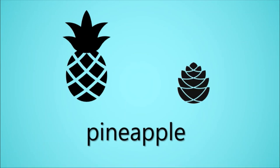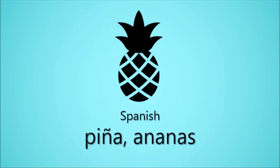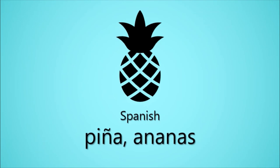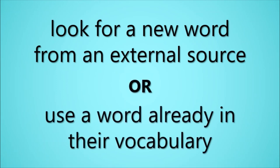Eventually, the word pinecone came about to differentiate the two. English wasn't the only language to do something like this. In Spanish, pineapples have the name piña or ananas, depending on location. While European Spanish speakers mostly use piña – which, like English, comes from comparison to pinecones – speakers in parts of Latin America use the word ananas. When speakers of a language encounter something new they need to describe, they may look for a new word from an external source, or they may use a word already in their vocabulary to describe it. In the case of pineapple, it seems that in most places it was the first approach which caught on.